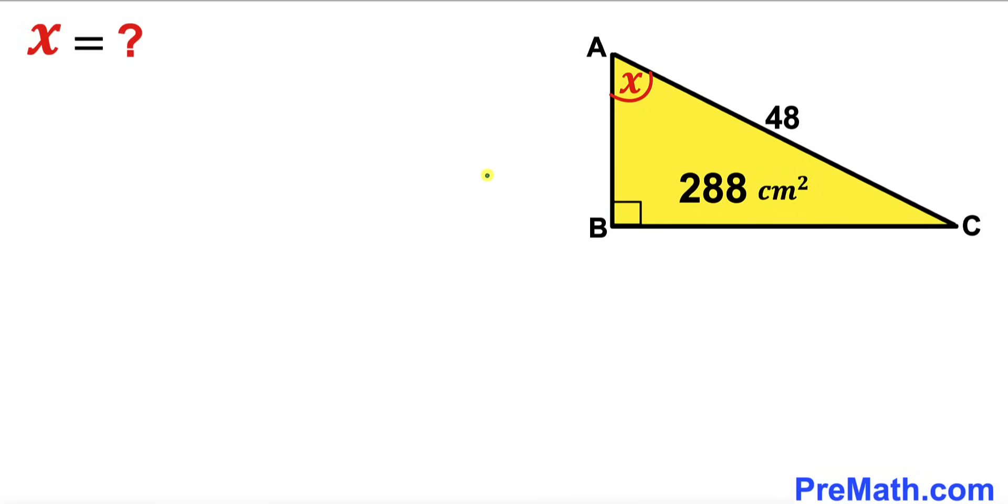Welcome to PreMath. In this video we have this right triangle ABC as you can see in this diagram, such that the area of this triangle is 288 centimeters squared and its longest leg AC is 48 centimeters, and now our task is to calculate this angle BAC.